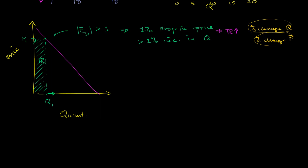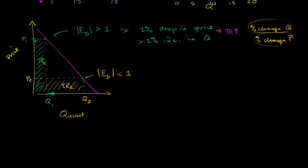Now if we go down to this lower part of the curve — let's call that P2 and that quantity Q2 — then this area would be total revenue 2, price times quantity. Over here we're going to assume that the absolute value of our price elasticity of demand is less than 1 at this point in the curve.